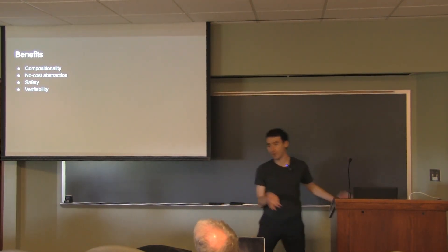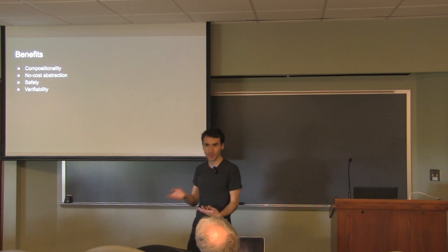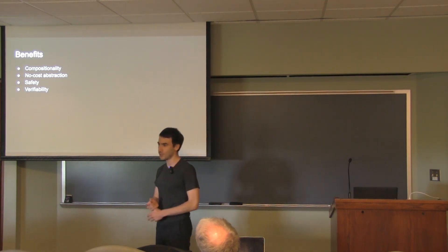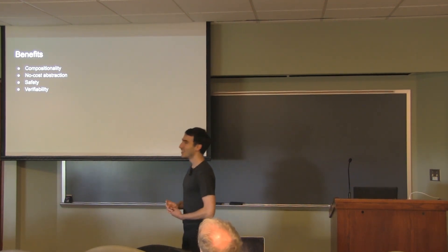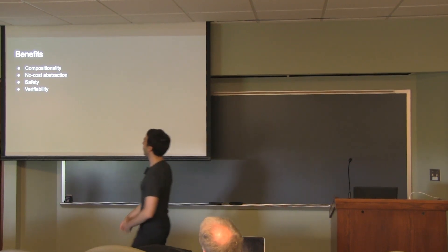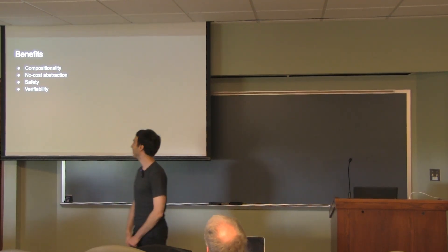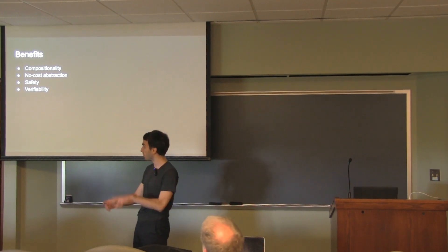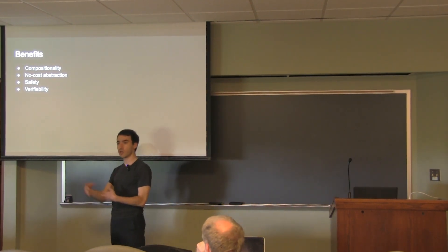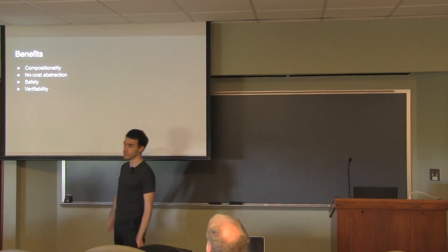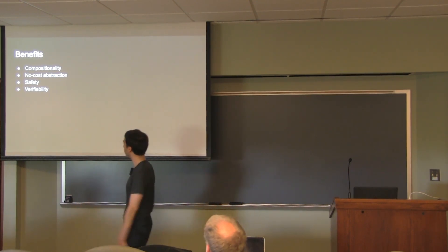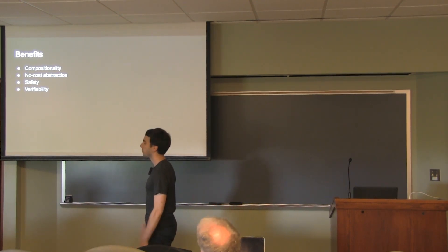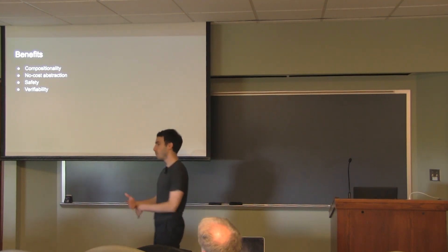Let me sum up the benefits of this approach. It's compositional — functions are compositional, you can compose them. There's this kind of no-cost ability to abstract, so you can drop down to the low level like with C if you want. The functions totally disappear when you compile to a constraint system. Types help with safety. And the fact that it's written in a high-level language makes it a lot easier to verify than a mess of constraints.